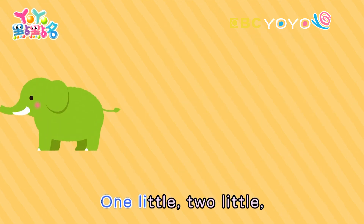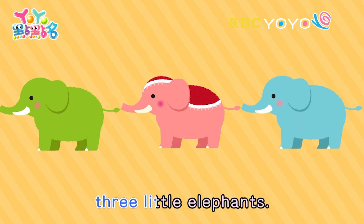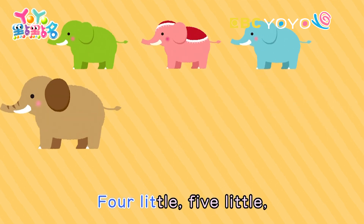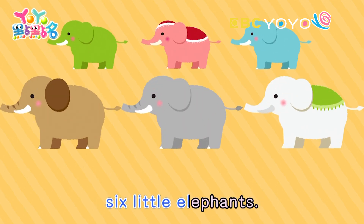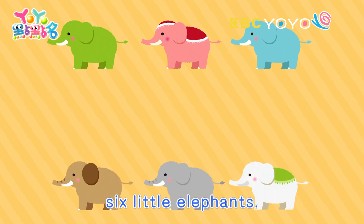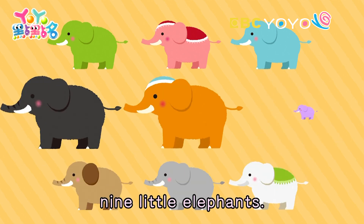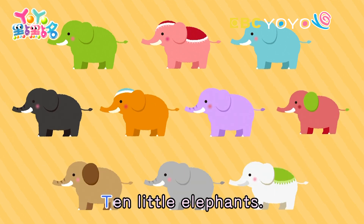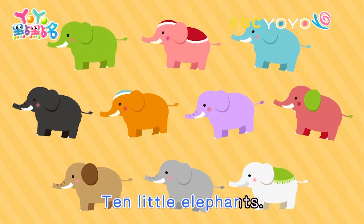One little, two little, three little elephants. Four little, five little, six little elephants. Seven little, eight little, nine little elephants. Ten little elephants.